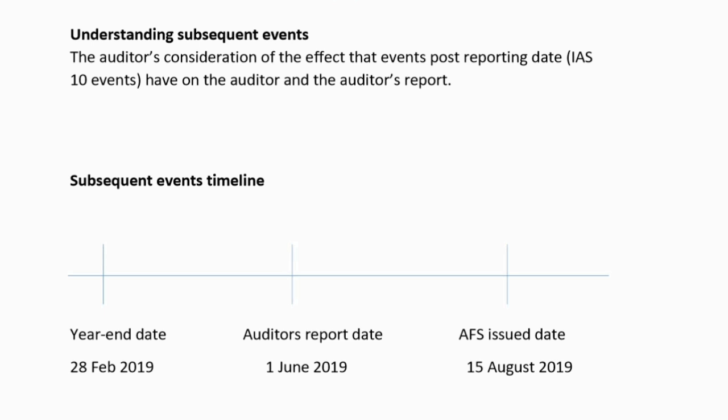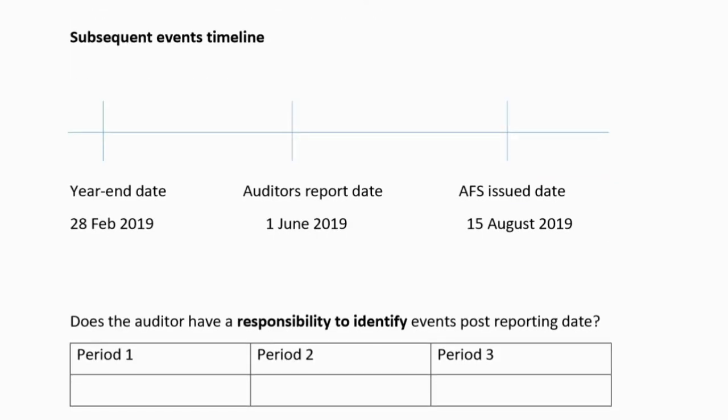In terms of understanding subsequent events, it is essentially what is the auditor's consideration of those post-reporting date events and the effect they are going to have on the auditor's report. Some post-reporting date events are adjusting — if management don't adjust them, they are misstatements. If management do adjust but incorrectly, they are still misstatements. We have to understand all post-reporting date events, whether adjusting or not, and ensure they've been accounted for correctly.